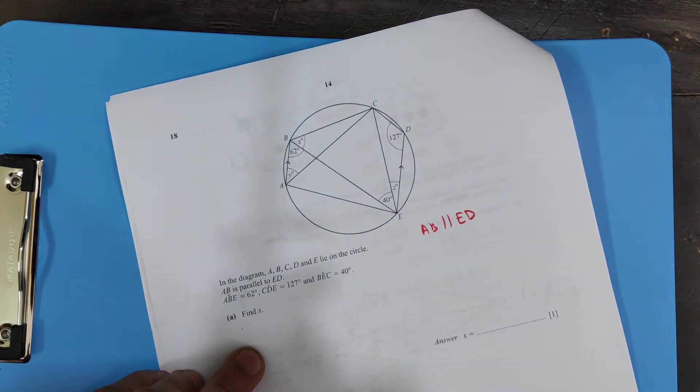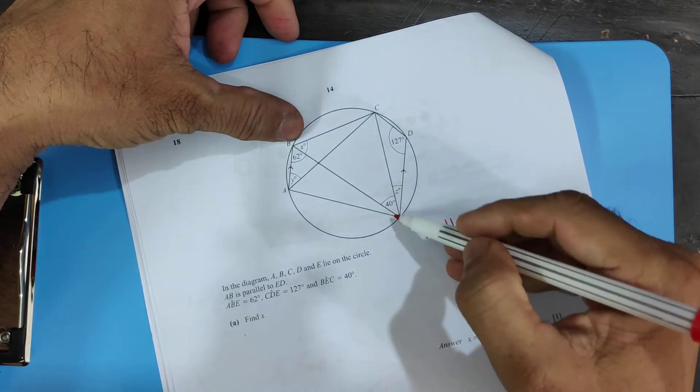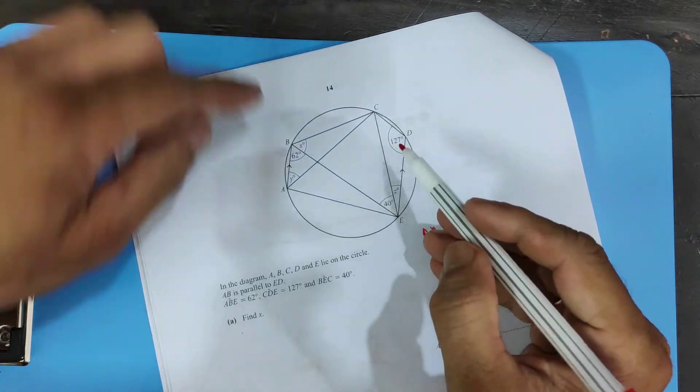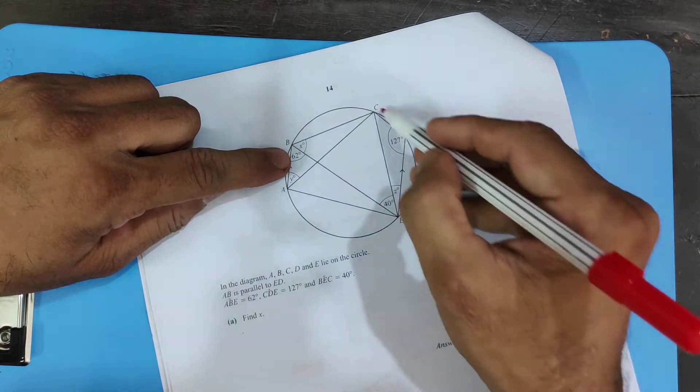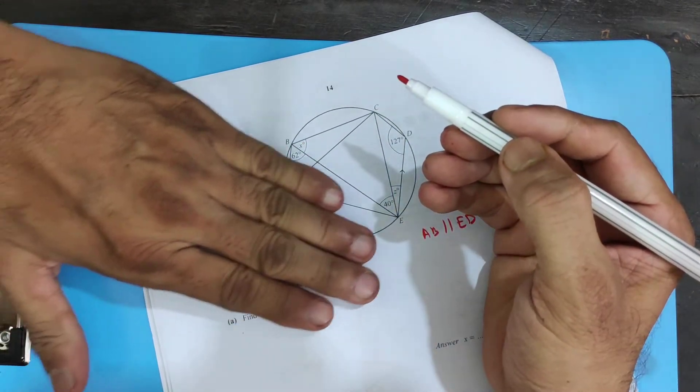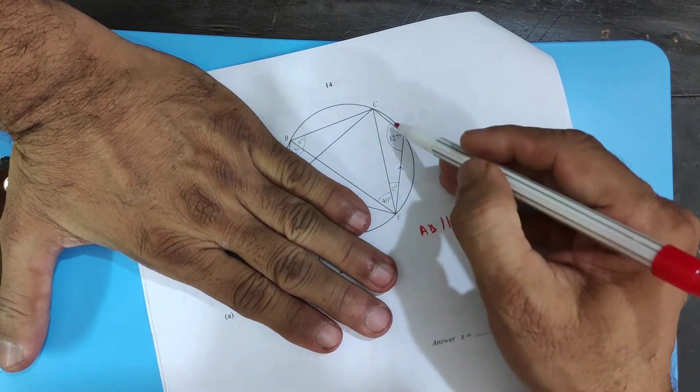Now, look at this one. B c d e, that's actually a cyclic quadrilateral. Forget about this triangle over here. B c d e, that's a cyclic quadrilateral. And b and d are opposite angles of a cyclic quadrilateral, and we know there is a relationship.